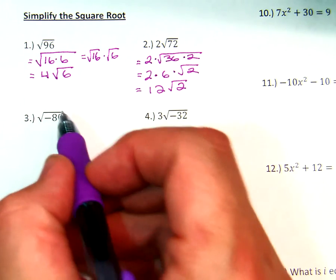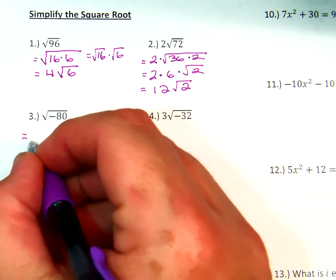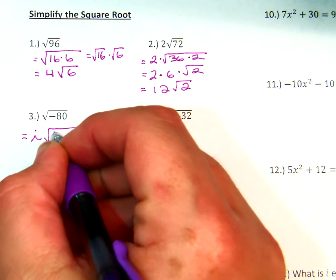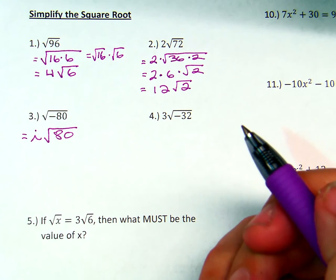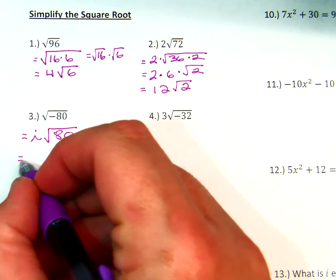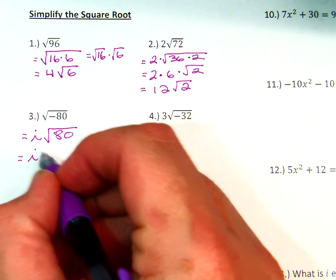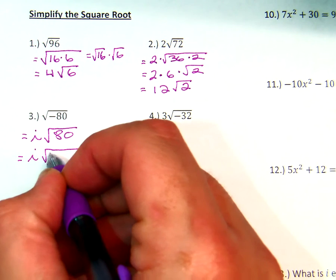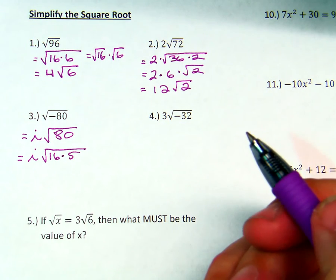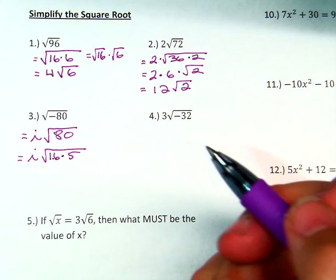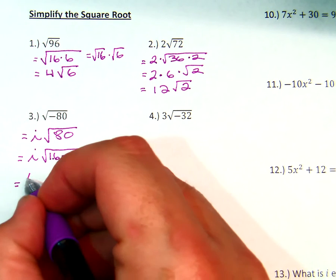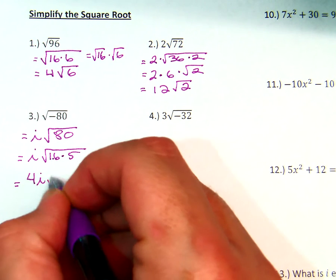Now, when you have a negative square root, the first thing we do is we take out an i. And it becomes the square root of 80. So this is going to be i times the square root of 16 times 5. What's the square root of 16? 4. So we're going to get 4i times the square root of 5.